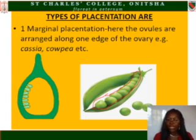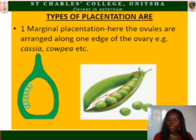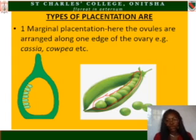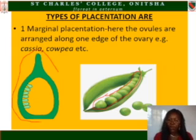Cowpea is the bean. In cassia, as you can see in the illustration on screen, the ovules — which are the seeds — are arranged marginally, meaning lengthwise. They are not double, and the legume has sutures which enable it to open on both sides. To draw it, use the diagram on the left-hand side.